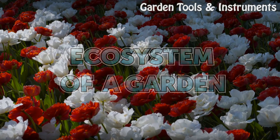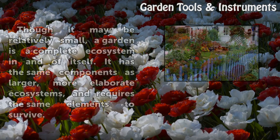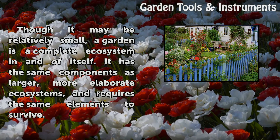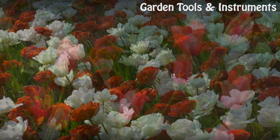Ecosystem of a Garden. Though it may be relatively small, a garden is a complete ecosystem in and of itself. It has the same components as larger, more elaborate ecosystems, and requires the same elements to survive.